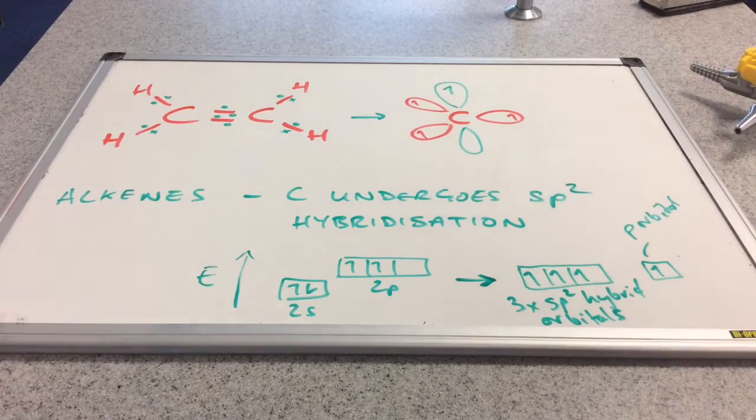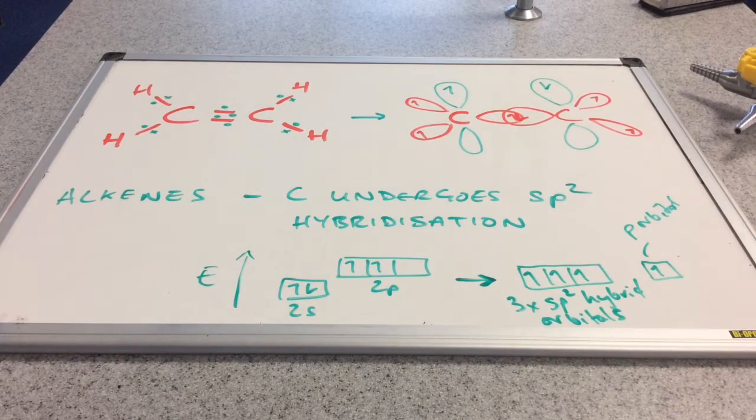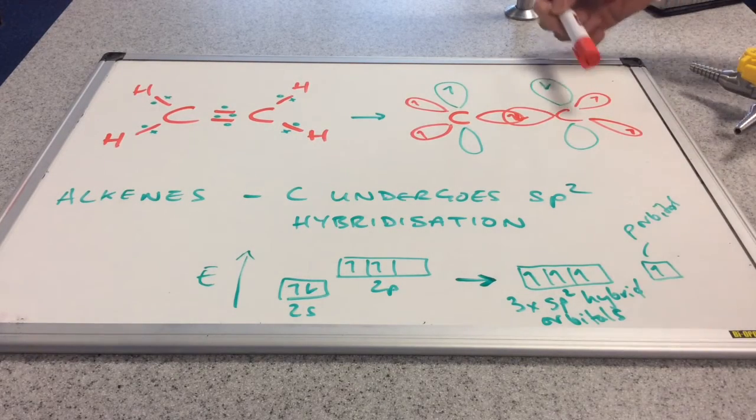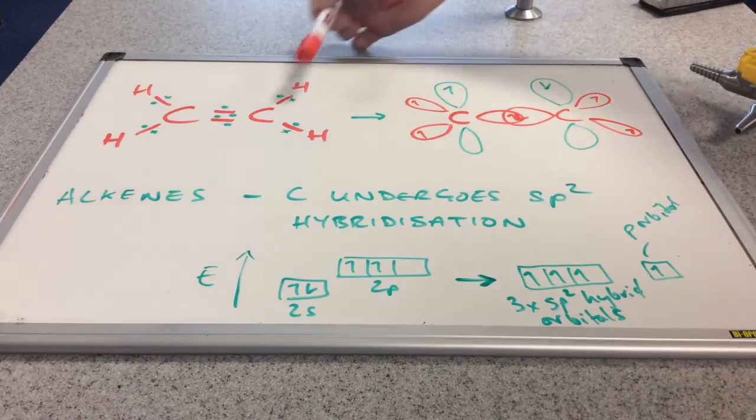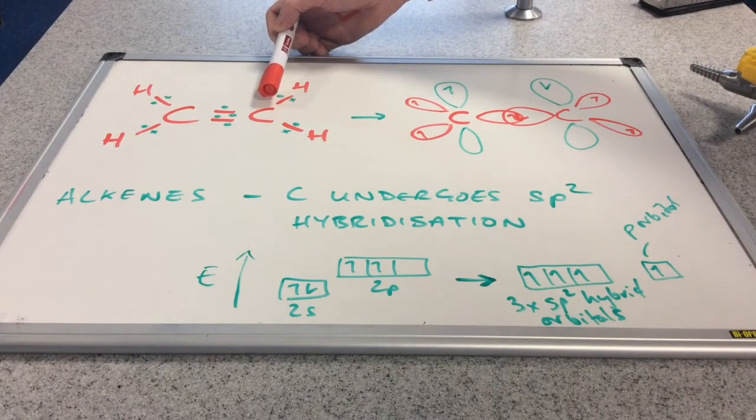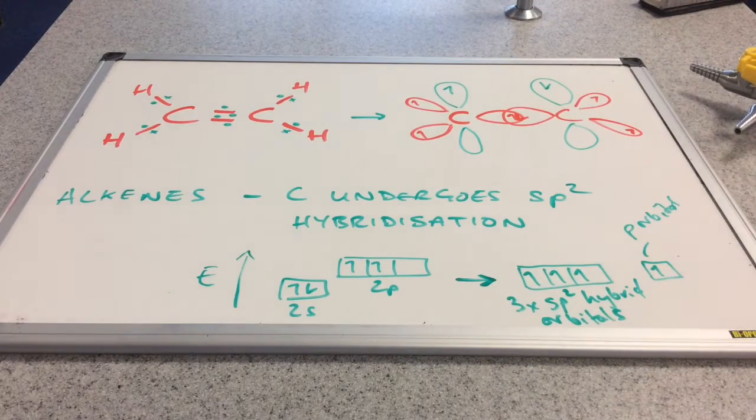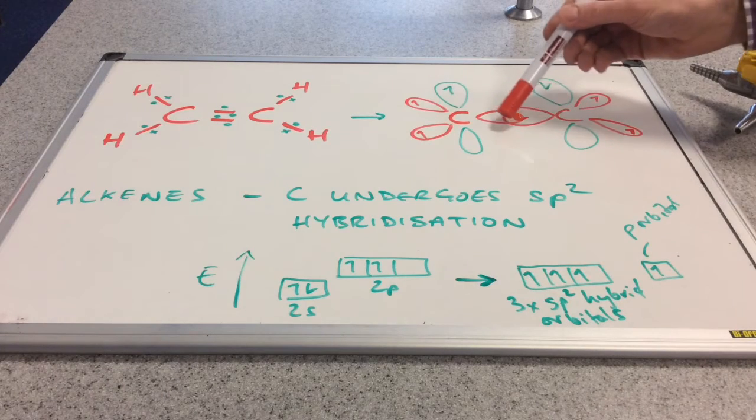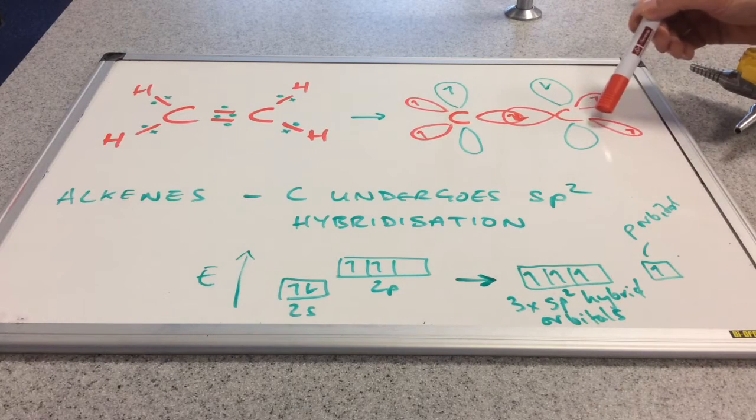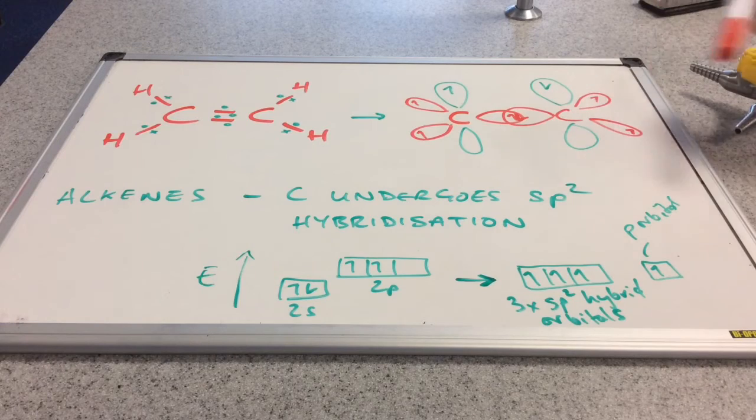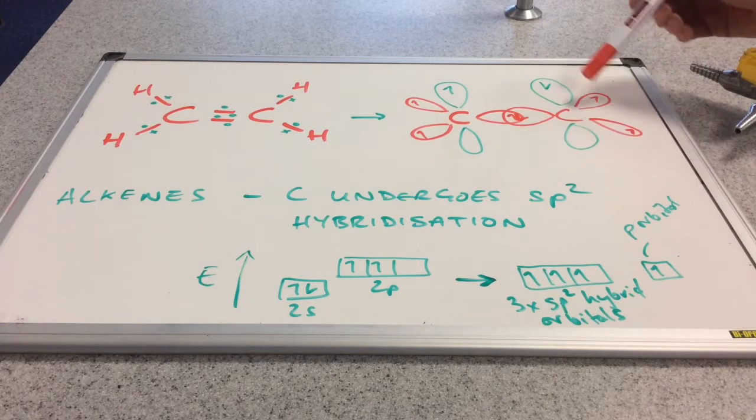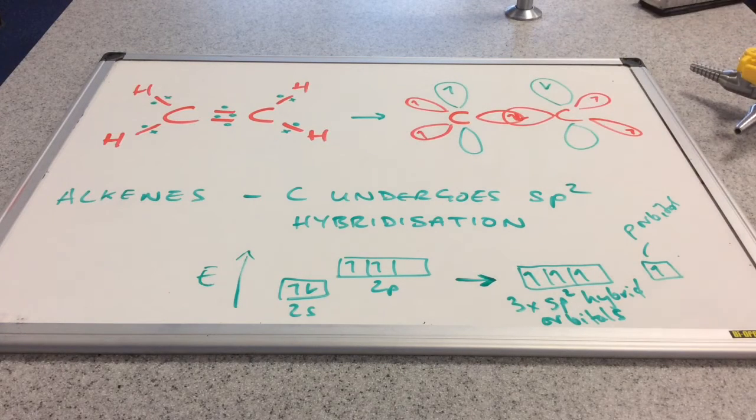So there's the p electron there. And you can see I've drawn an identical carbon atom on the right hand side now, and that's obviously going to represent this carbon here, with exactly the same thing going on, three sp² hybrid orbitals with one electron in each, and there's that unhybridised p orbital with its electron in there.